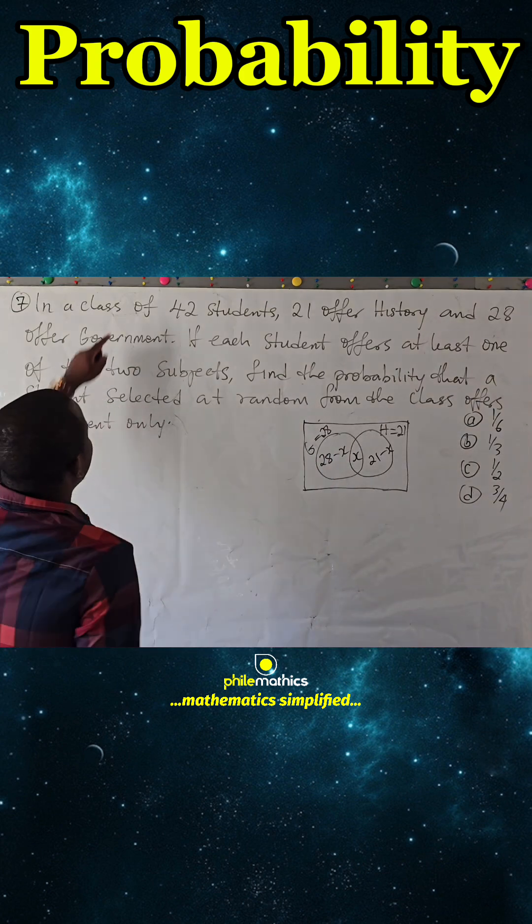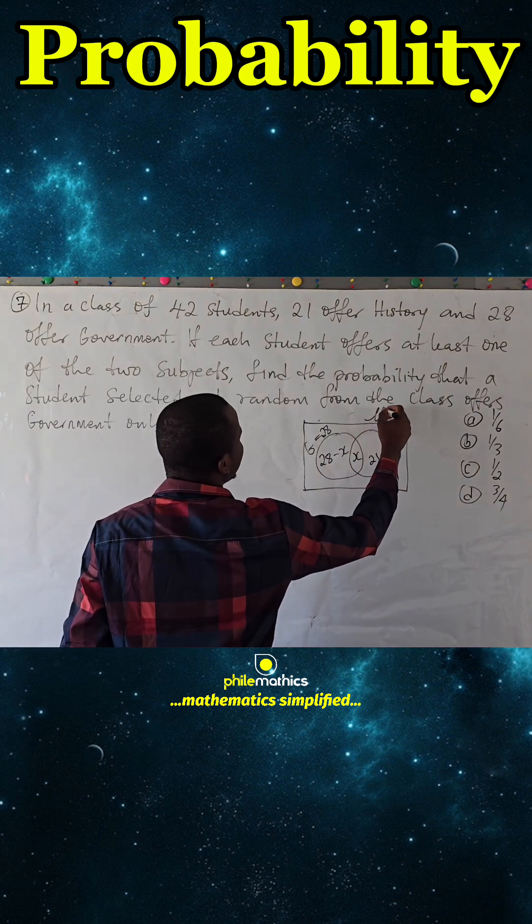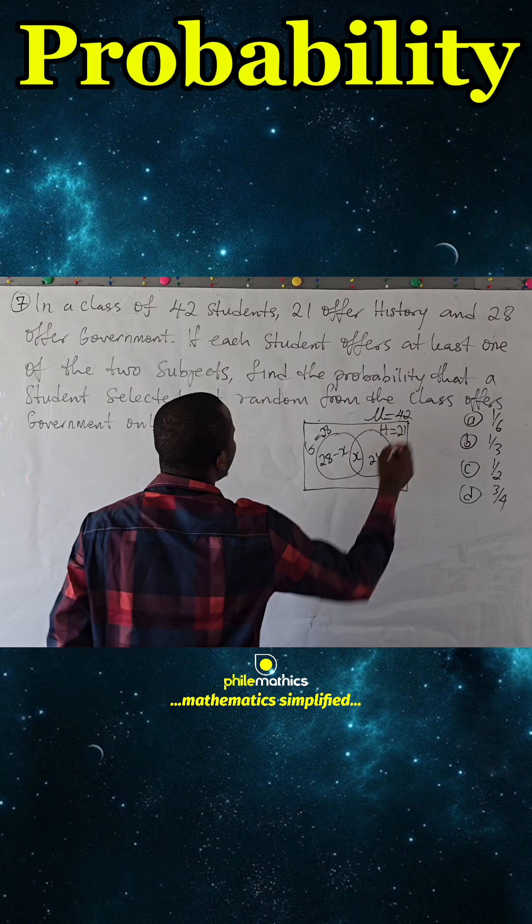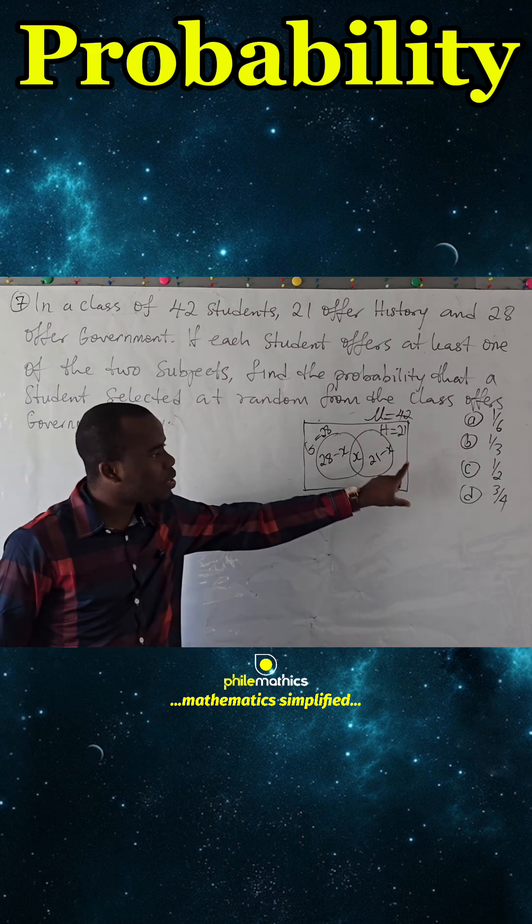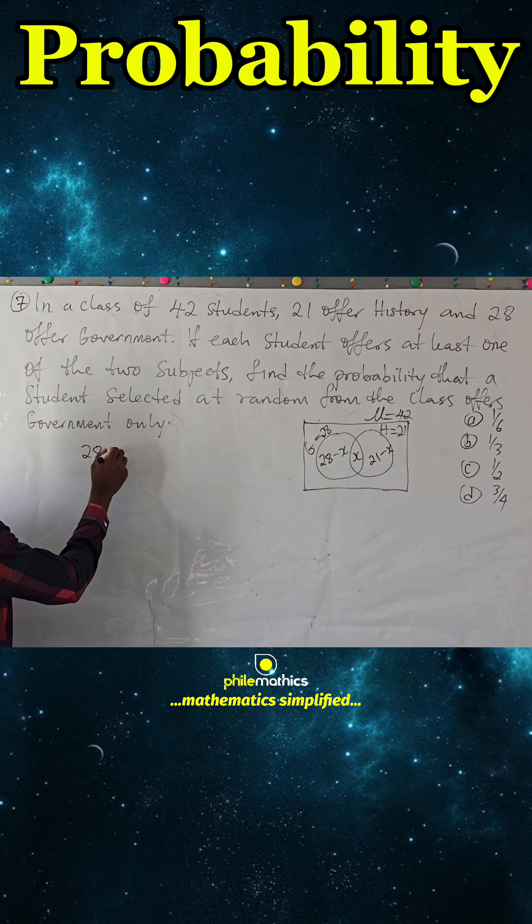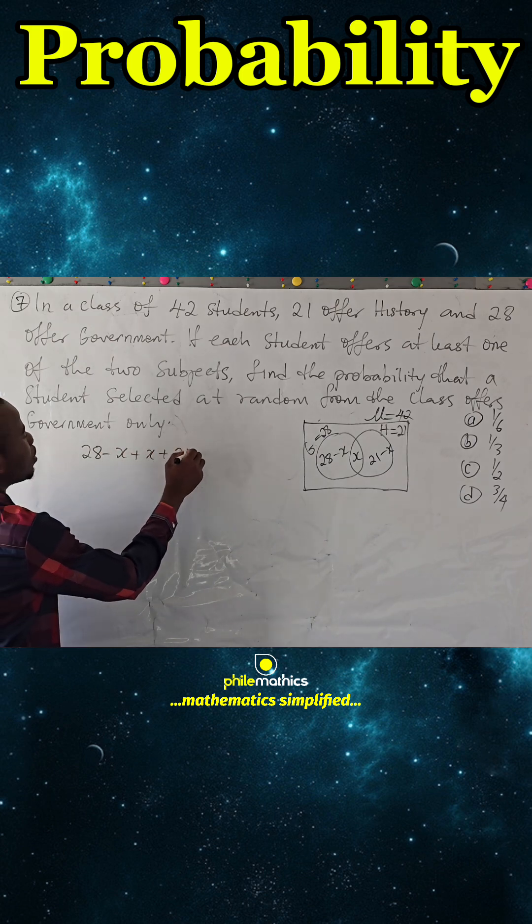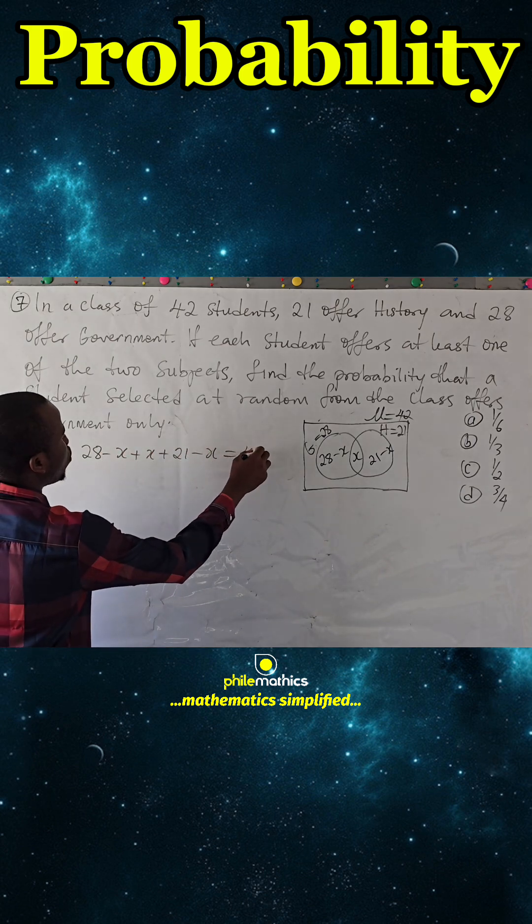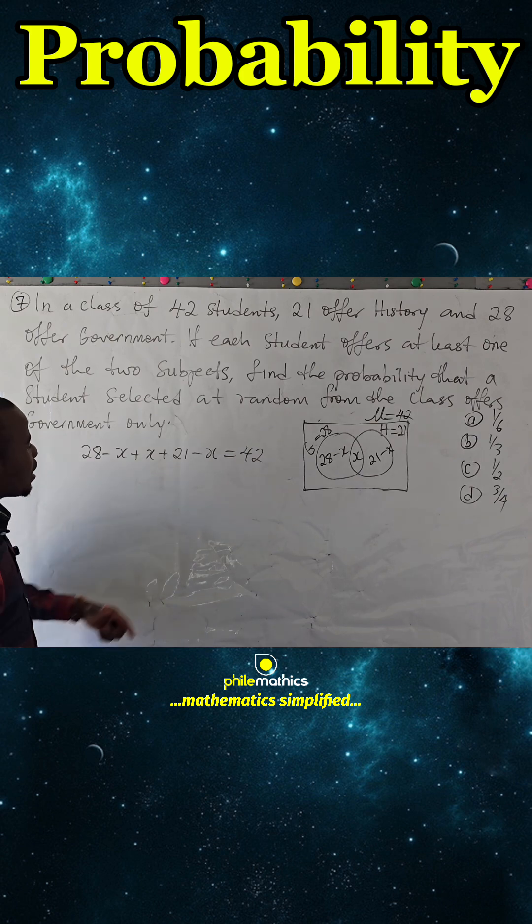The total students in the class is 42, so the universal set should have a total of 42. So if we sum this, we should get 42. 28 minus X plus X plus 21 minus X should give 42. So this is how we find what X is.